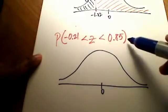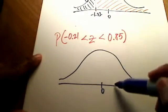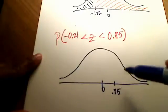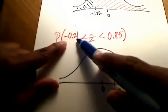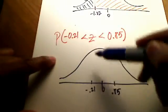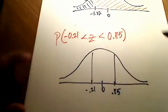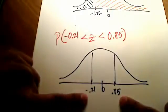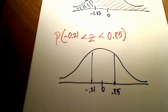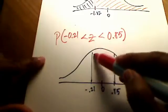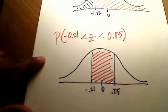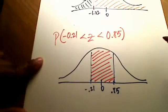So here is our picture, 0 sitting right in the middle. Where is a positive 0.85? That's got to be to the right of 0 because all these numbers over here are positive, so 0.85 is sitting over here. And where is negative 0.21? That's got to be on the left side of 0 because that's where all the negatives sit. So we're looking for all of this area that's in between them. All the area in between them.